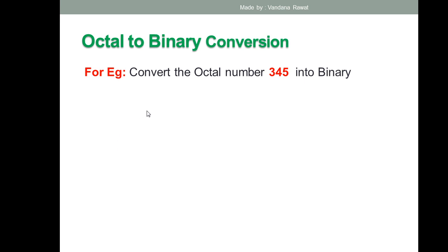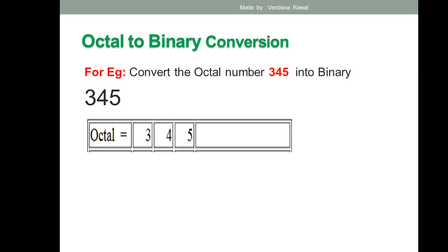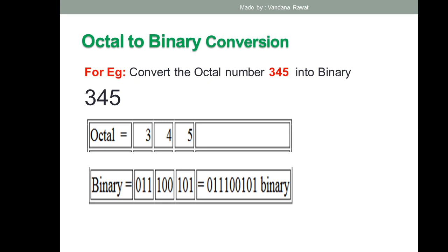Let's take an example: convert the octal number 345 to binary. You write down 3, 4, 5. Then write the binary equivalent of each digit: 3 = 011, 4 = 100, 5 = 101. If you're unsure, you can verify each one. Grouping the digits together, the final binary representation of 345₈ is 011100101.